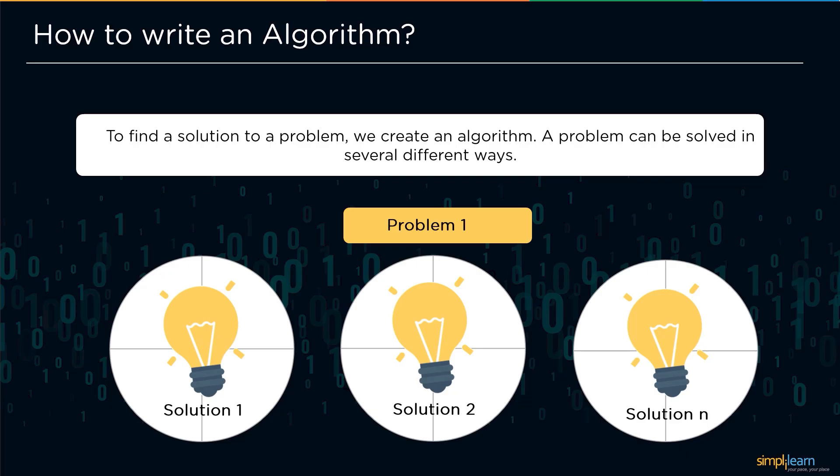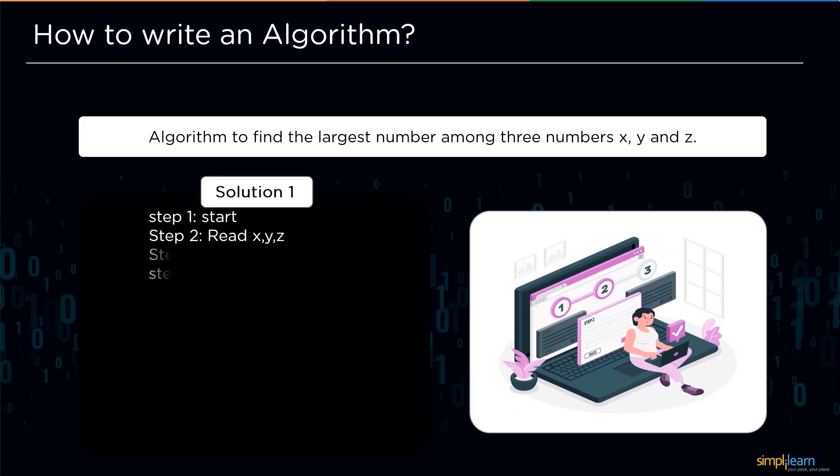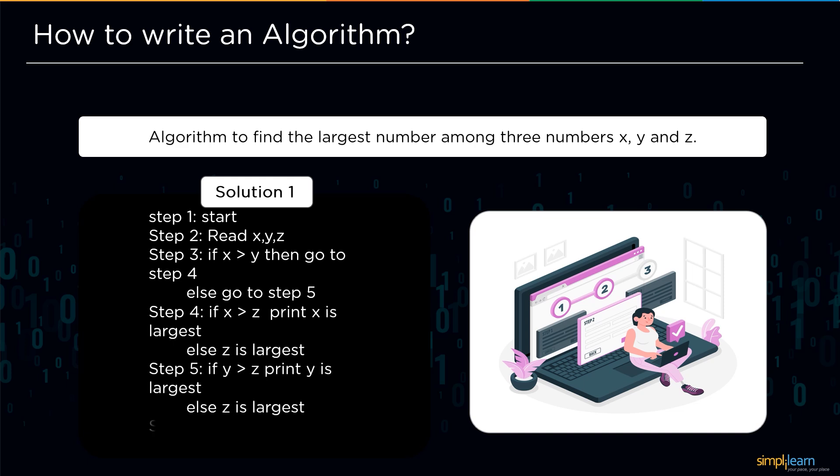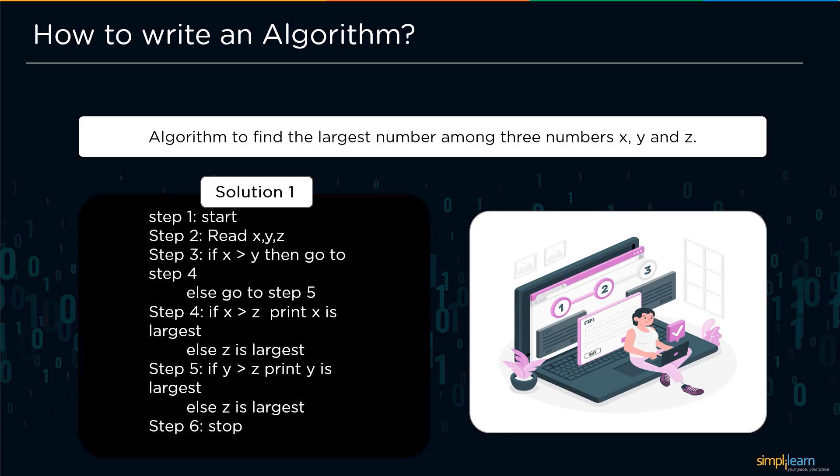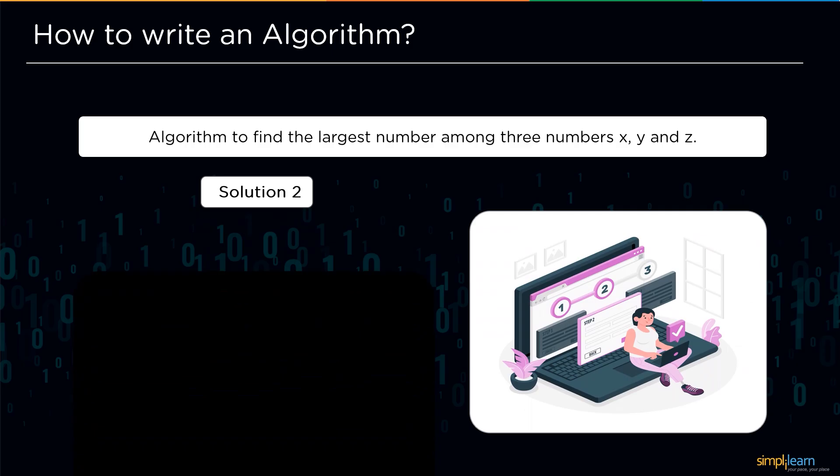Let's look at an example of how to write an algorithm. Consider the following scenario: we need to create an algorithm to determine the largest number among the three given numbers x, y, and z. The initial solution to the problem can be written in this manner: Step 1, begin by reading all three numbers. Step 2, if x is greater than y, proceed to step 4, else proceed to step 5. Step 3 establishes a condition that if x is greater than z, then x is the largest, otherwise z is the largest. If y is greater than z, z will be the greatest number, otherwise y will be the largest number amongst all three in step 5, and the procedure will be terminated.